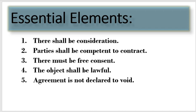Next is the lawful object. The object of the contract or the agreement should be lawful — it should not be something which is against the law. For example, if me and my friend enter into a contract where we agree that we are going to commit a crime, and if tomorrow we want to enforce that contract legally, it's not a valid contract. It's essential that there has to be a lawful object in an agreement so that it can be a contract in the eyes of law.